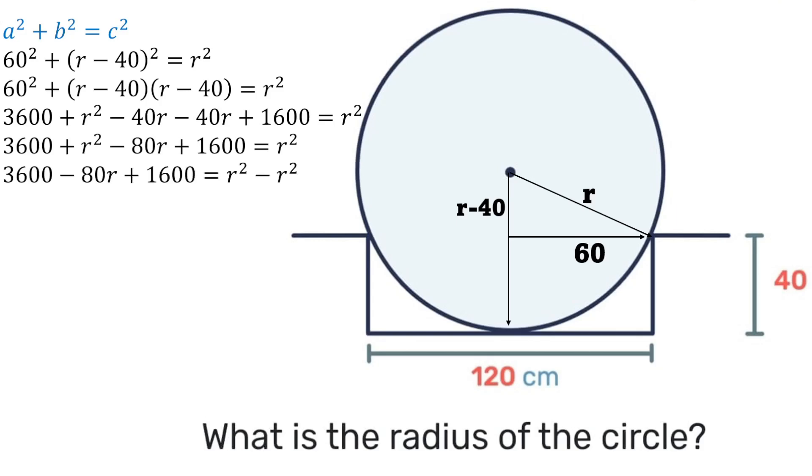In the next step we can transpose the r squared, and r squared minus r squared will leave us with 0. Then we can transpose the 80r. 0 plus 80r is just 80r. 3600 plus 1600 is 5200.